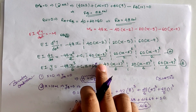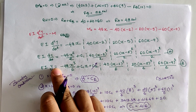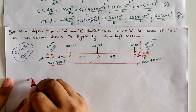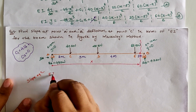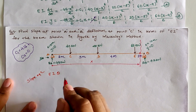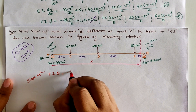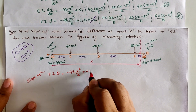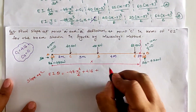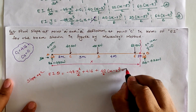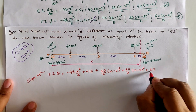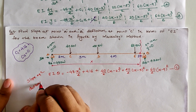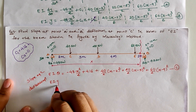Now we substitute C1 = 416 and C2 = 0 into both equations of slope and deflection to form the final equations. From equation A, the final slope equation is: EI dy/dx = EI·θ = −48x²/2 + 416 − 40(x−2)²/2 − 20(x−5)²/2 − 60(x−9)²/2. The deflection equation EI·y is obtained similarly.